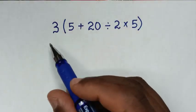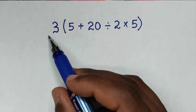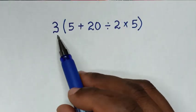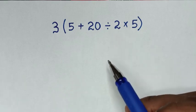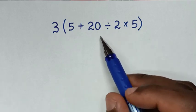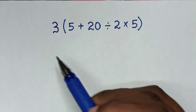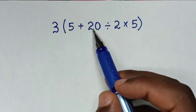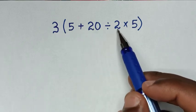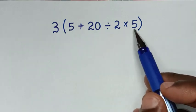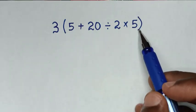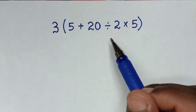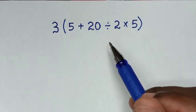Hello, you're welcome to solve this math problem on orders of operations. The problem is: 3 bracket 5 plus 20 divided by 2 times 5 bracket. Let's solve it by using the BODMAS rule.